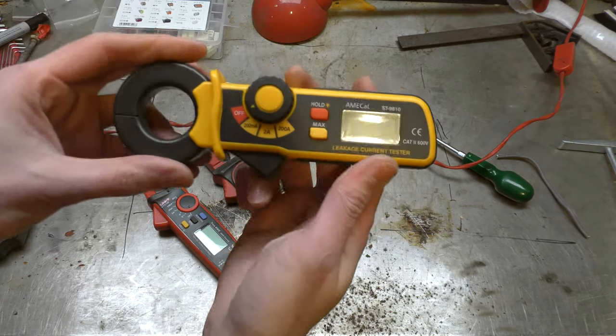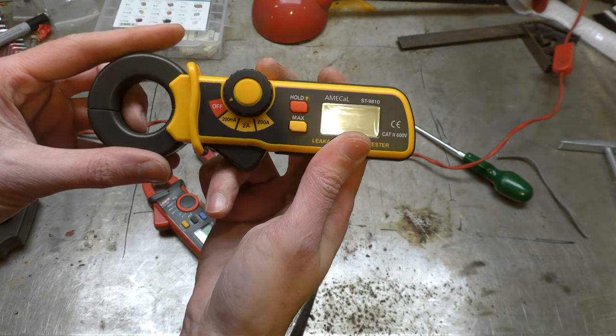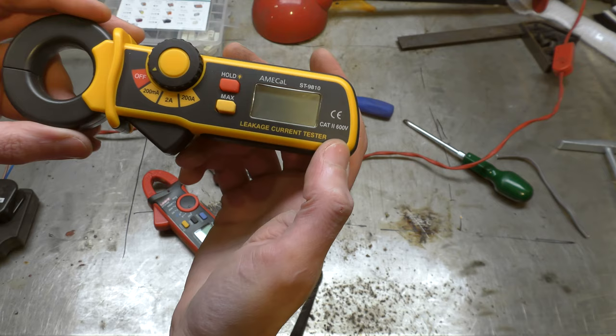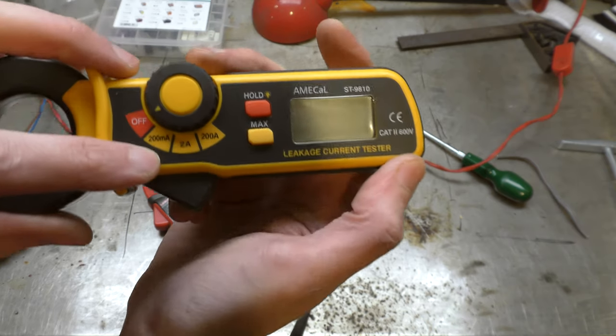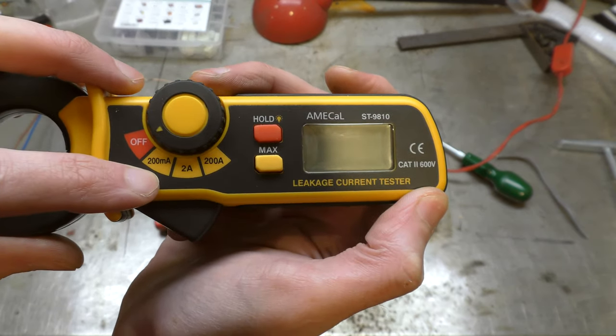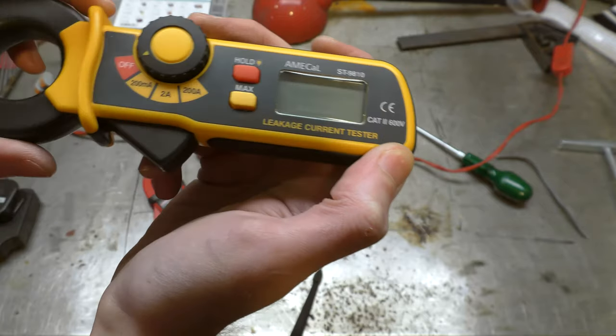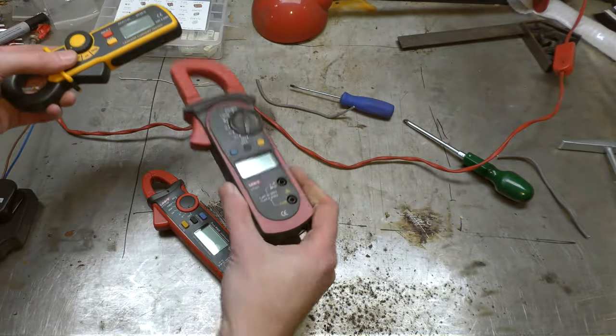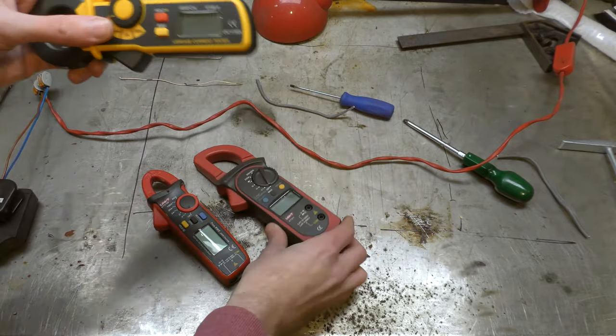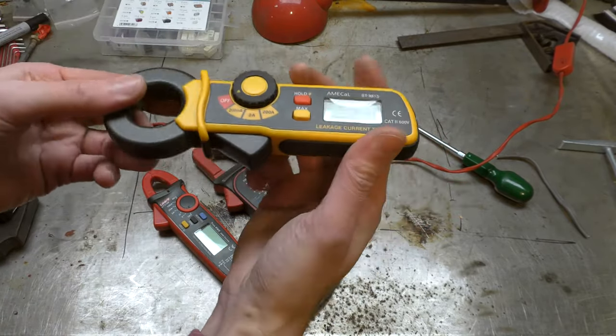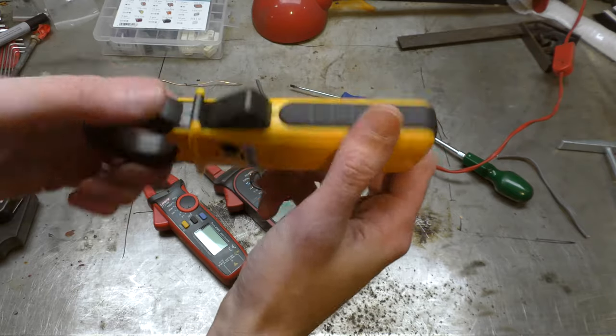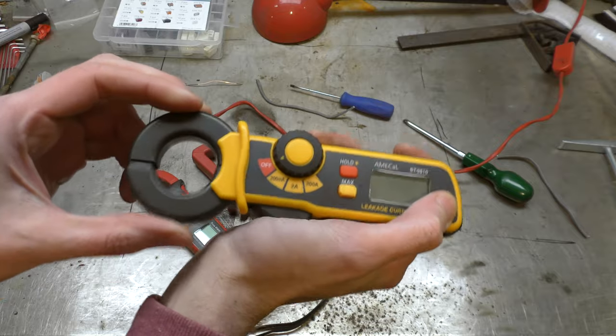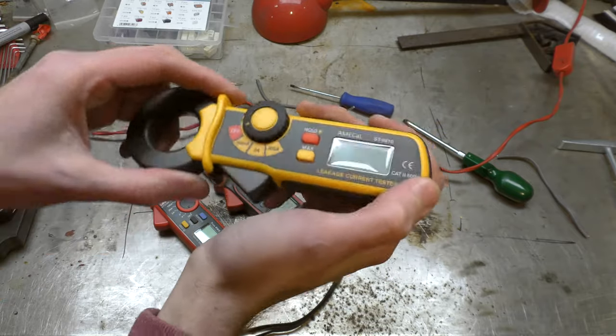The next one I bought is this Amical ST-9810, and this is the one that does really low current testing, 200 milliamps and up to 200 amps. I should have also said this one was about 20 pounds, this one was 70 pounds, and this is supposed to be a really good one, like an industry standard. I was using it for current leakage testing to see how bad my old wiring is. It's pretty bad.